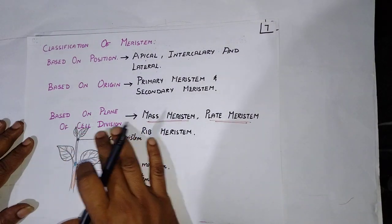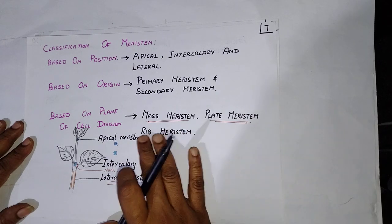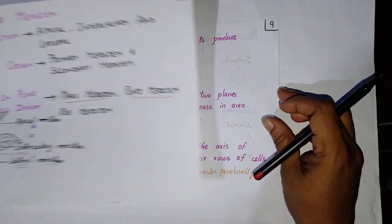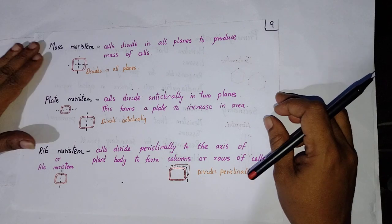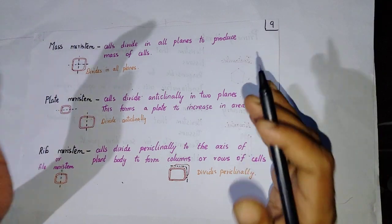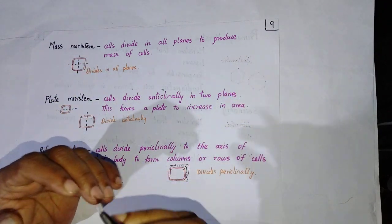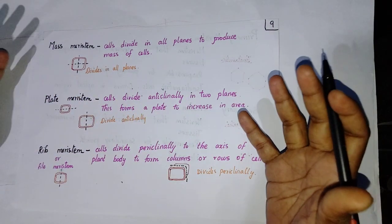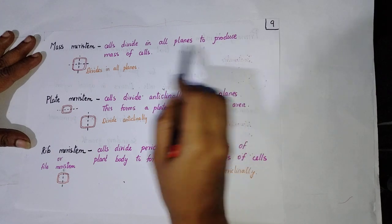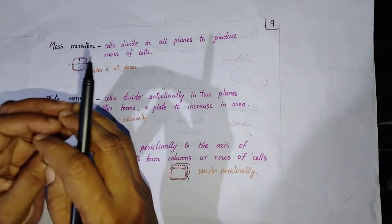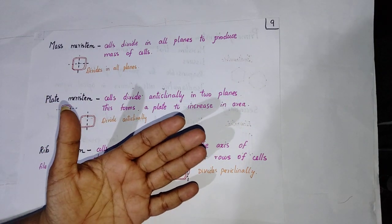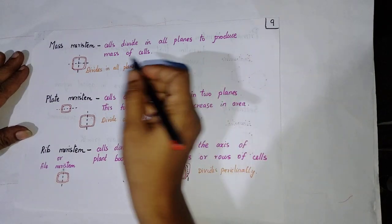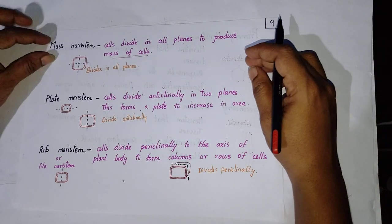We have seen the three different types of meristems based on the plane of cell division: mass meristem, plate meristem, and rib meristem. In mass meristem, the cell divides in all planes — anticlinal, lateral, horizontal, and vertical — to produce a mass of cells. Just like a mass of people or animals implies a huge number, here too a huge number of cells are produced. That is called a mass meristem.